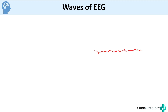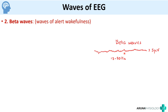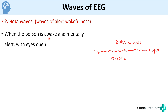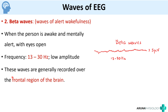The next waves are called the beta waves. You can see that the amplitude has reduced a lot and the frequency has increased. They are the waves of alert wakefulness — when a person is awake and mentally alert with eyes open. The frequency of these waves is around 13 to 30 hertz and of low amplitude. These waves are generally recorded over the frontal region of the brain, whereas alpha waves were recorded at the parieto-occipital region.